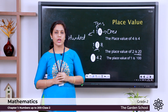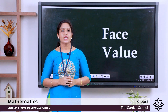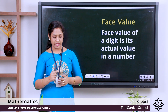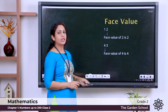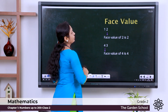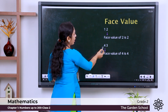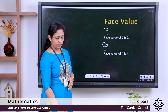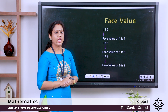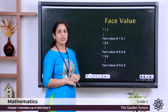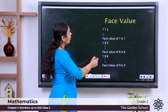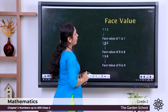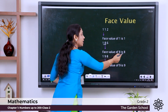Hope you understood place value. Now we are moving to face value. The face value of a digit is the number itself. For example, in the number 12, the face value of 2 is 2 itself. In the number 43, the face value of 4 is 4 itself. In the three-digit number 112, the face value of 1 is 1 itself. In 186, the face value of 8 is 8 itself. So the face value is always the digit itself.